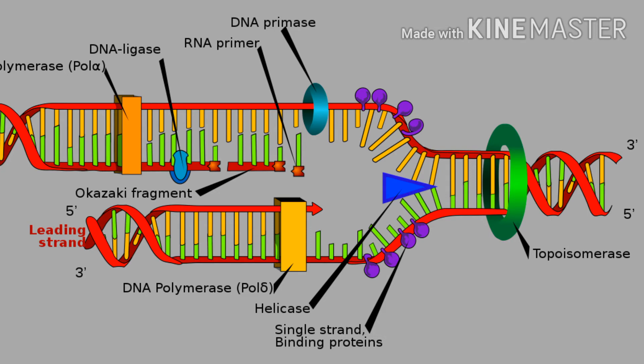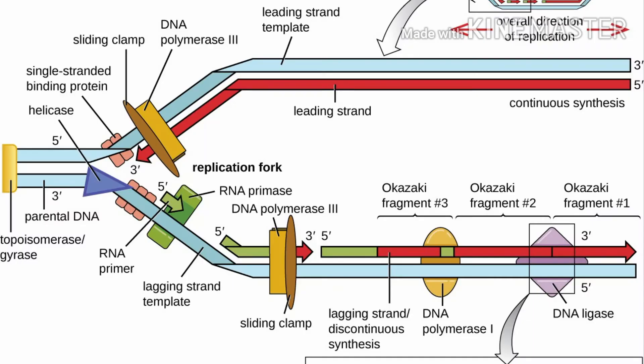If we talk about eukaryotes, first comes ORC protein — that is Origin Recognition Complex — which binds to the region of origin and recruits other proteins required for the DNA replication process. Then CDC6 — Cell Division Cycle 6 — it is a part of the pre-replicative complex and is responsible for loading of MCM to ORC.